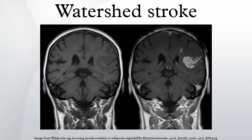A sharp drop in blood pressure is the most frequent cause of watershed infarcts. The most frequent location for a watershed stroke is the region between the anterior cerebral artery and middle cerebral artery. These events caused by hypotension do not usually cause the blood vessel to rupture.